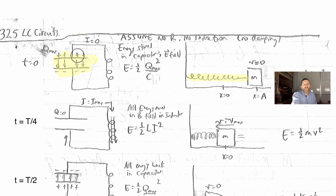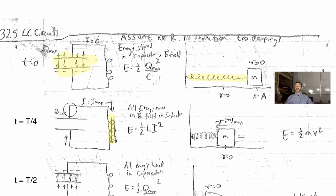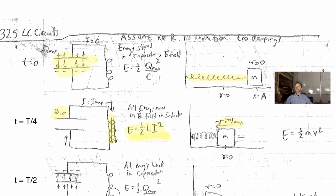In our LC circuit, it's all stored in the capacitor. Then what happens is, by closing a switch or just letting this go, the charge will start to move and at some point it will hit a maximum value. Why doesn't the current hit a maximum value instantly? Because there is a back EMF — this inductor is fighting the current change, and it gets less and less successful until you get I-max. Once you have I-max, that happens when the charge is zero. All of the energy is then stored in the magnetic field, analogous to kinetic energy — it's one-half L times I-squared, all stored in the inductor.